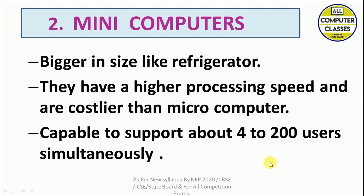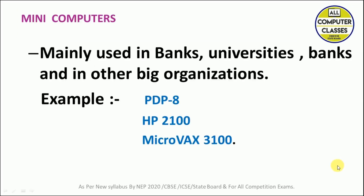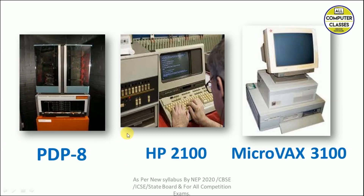The second category is mini computers. Mini computers are more advanced than micro computers — they are bigger in size, about the size of a refrigerator. They have higher processing speed and are costlier than micro computers, capable of supporting up to 200 users simultaneously. Mini computers are mainly used in banks, universities, and other large organizations. Examples include the PDP-8, HP 2100, and MicroVAX 3100. The PDP-8 was the first mini computer.